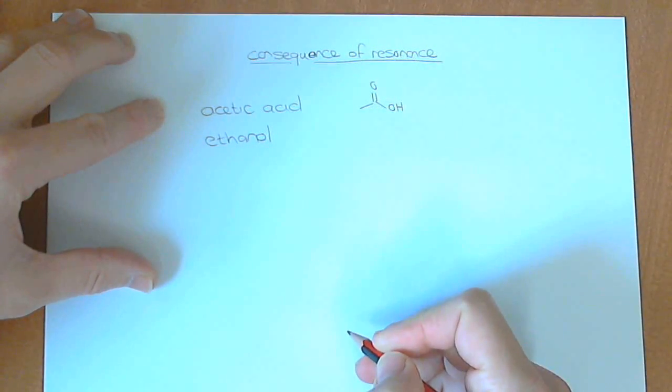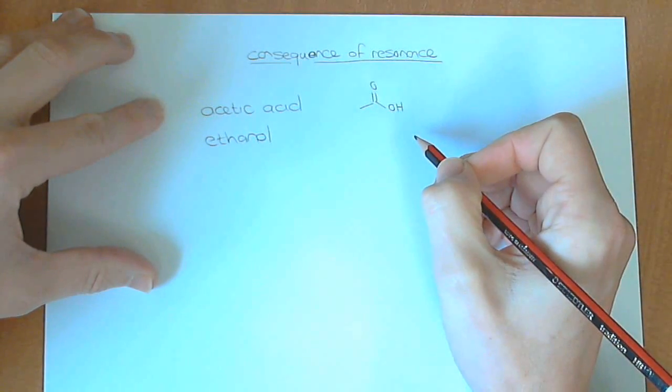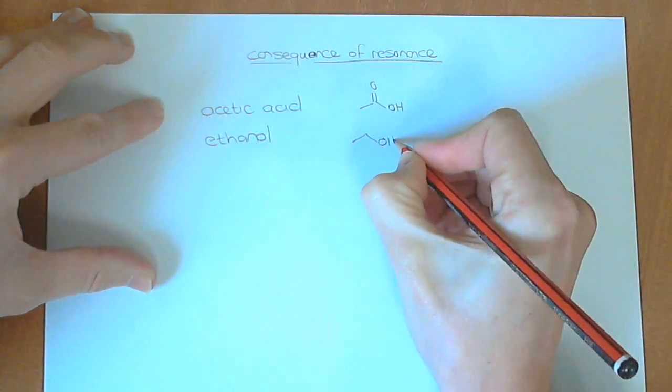This is acetic acid, two carbons, it's a carboxylic acid group over there. And ethanol looks like this.